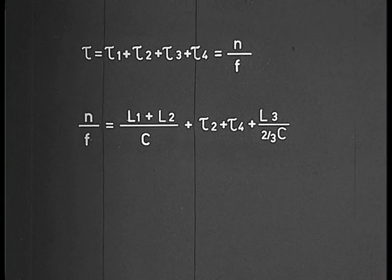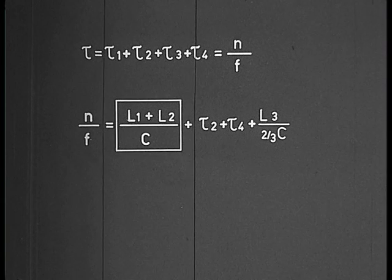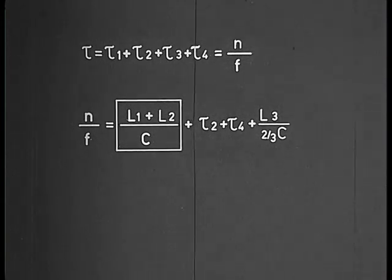If the reflectors are moved, the only changes are in L1 and L2, which in turn causes a variation in F.